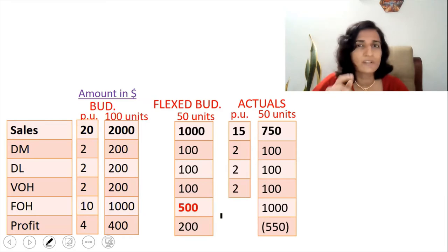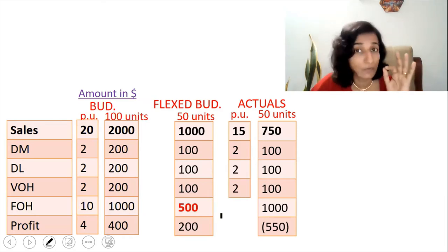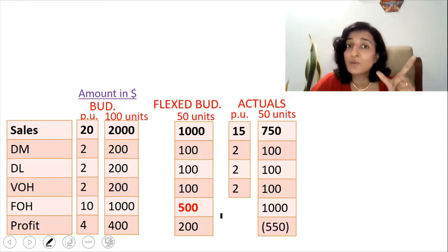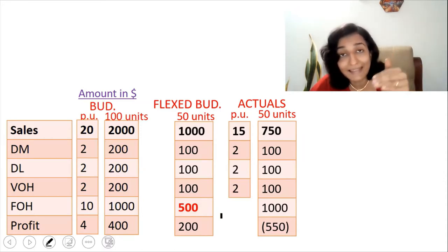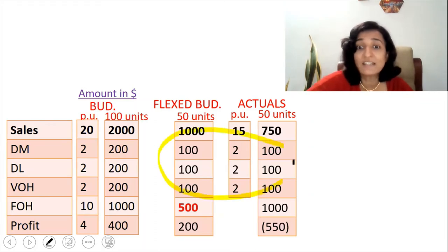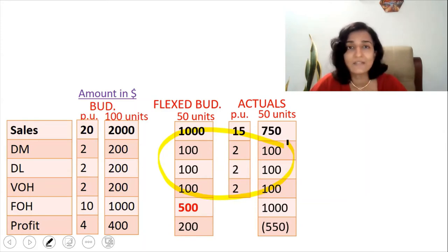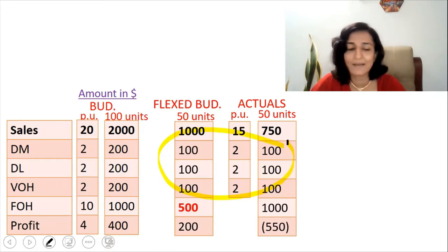Before proceeding with this question, if you are not thorough with the five basic variances that have already been taught, I request you to watch those five videos first. If you're very lazy, you can skip direct material, direct labor, and variable overheads for the time being since the variance is zero in this question — but at least go and look at the fixed overhead variances and the sales variances.